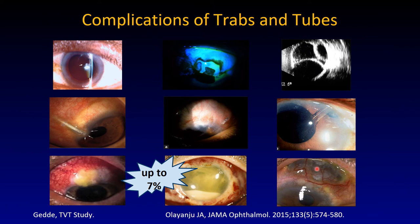Here is a collection of terrible complications: flat chambers, leaking blebs, kissing choroidals, eroding hardware, endophthalmitis, and blebitis. Not to underestimate how common this actually is — we all live as glaucoma surgeons in denial that this would happen to our patients until it hits the statistical number that happens every 1,000 to 3,000 patients, and one realizes this is really a potentially dangerous surgery.